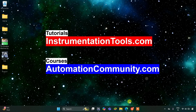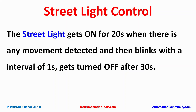Hello everyone, welcome to Automation Community. Today in this video we are going to discuss an example about a street light control system. The street light gets on for 20 seconds when there is any motion detected, then blinks with the interval of one second and gets turned off after 30 seconds. In this example we will use normally open contacts and normally closed contacts, latching, and memory bits like TP and TON.